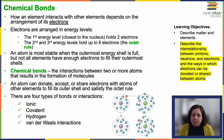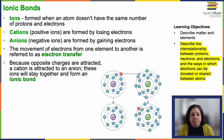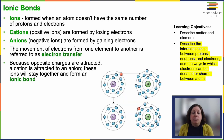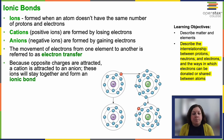There are four different types of bonds: ionic bonding, covalent bonding, hydrogen bonding, and van der Waals interactions. Let's start with ionic bonding. Ions are formed when an atom does not have the same number of protons and electrons, which makes it charged. A cation is positively charged, and cations form by losing electrons — they have fewer electrons than protons.